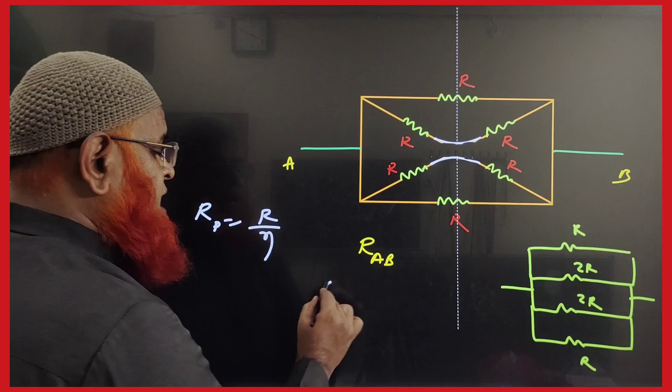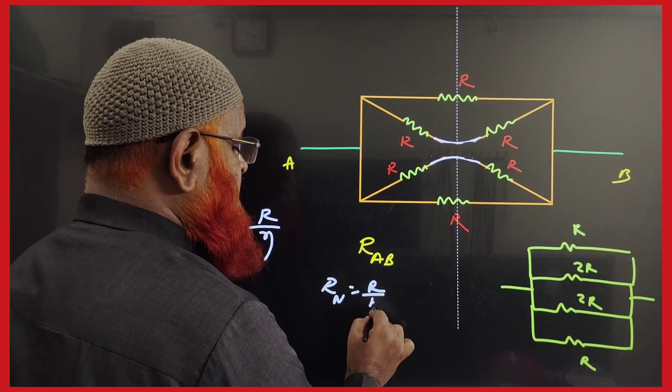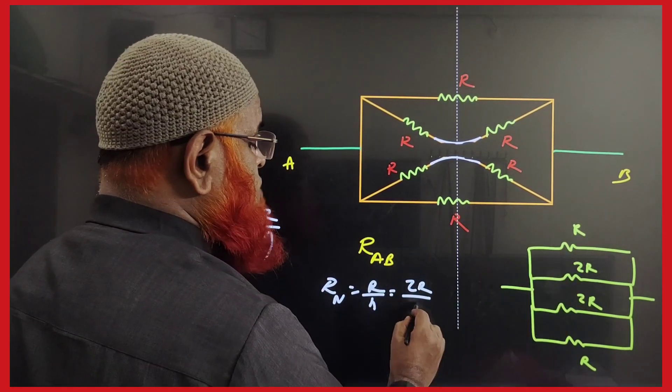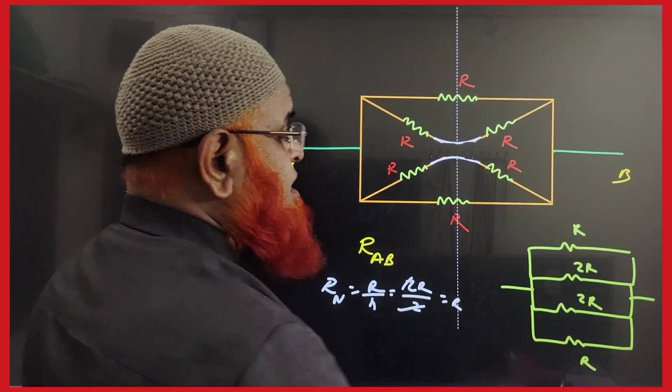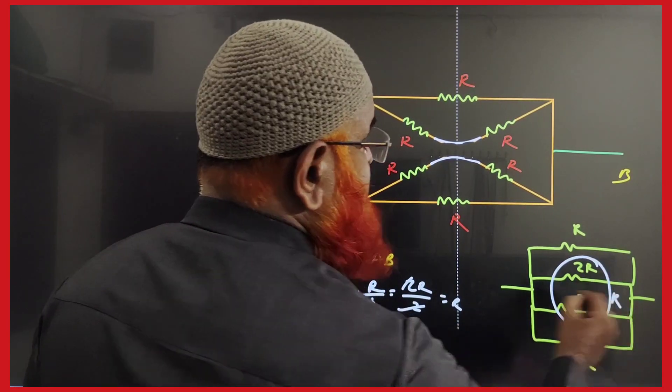There are 2 resistors, right? So R_net is going to become R by N. Here 2R by N - how many are parallel? 2 are parallel. So 2R/2. Resistance is R. From these two combinations you get resistance R. Then R, R - 3 are parallel.